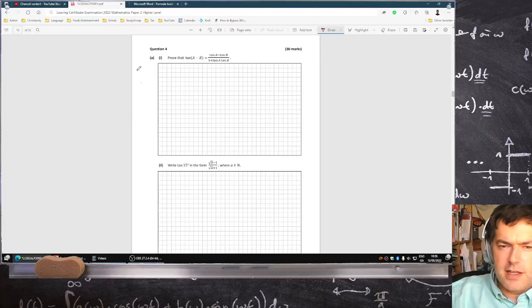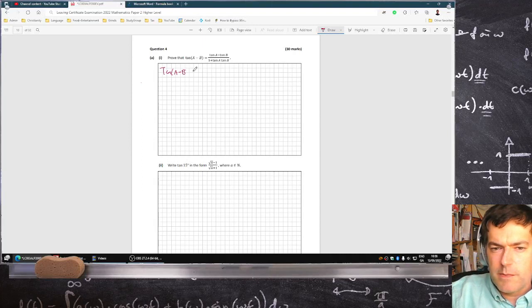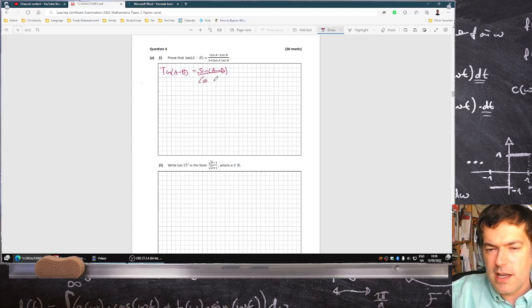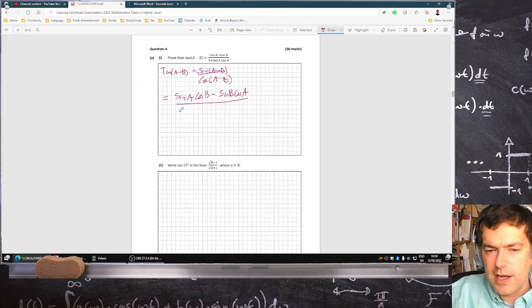Okay, prove this. Tan(a-b) equals sine(a-b) over cos(a-b). The compound angle formula for sine on the top is sine(a)cos(b) minus sine(b)cos(a), and then on the bottom is cos(a)cos(b).